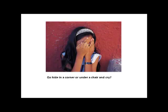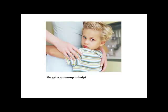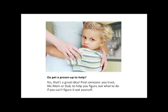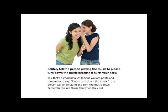The positive choices follow. Go get a grown-up to help — yes, that's a great idea. Find someone you trust like mom or dad to help figure out what to do if you can't figure it out yourself. Another choice is to politely tell the person playing the music to please turn down the music because it hurts your ears — this encourages the child to self-advocate. Yes, that's a good idea. As long as you're polite and remember to say please, the person will understand and turn the music down. Remember to say thank you when they do, reinforcing other social skills such as good manners.